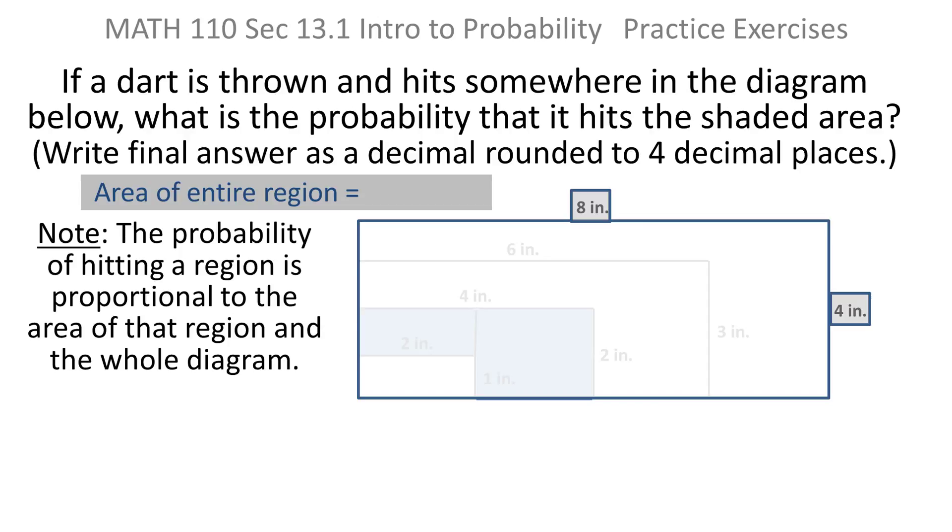Let's start off with the area of the entire region. Just forget about the internal parts of it. The entire region is basically an eight by four rectangle. And as we all know, the area of a rectangle is simply length times width. So the area of the entire region is easy. It's 32.